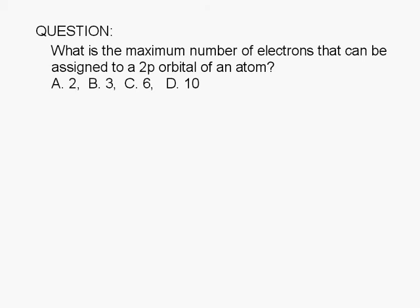What is the maximum number of electrons that can be assigned to a 2p orbital of an atom? A. 2, B. 3, C. 6, or D. 10.